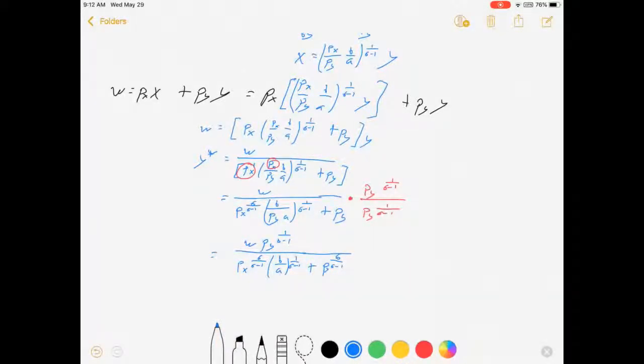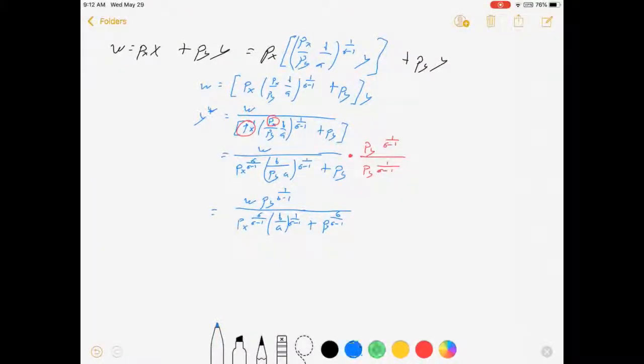There we go. Now, that is looking nice and simplified. I'm going to do one more optional step. The variant text does this. Some books like to do this. They invent some r. R is equal to σ/(σ-1), which then means r-1 is equal to 1/(σ-1).